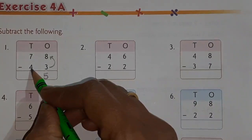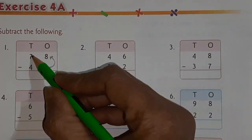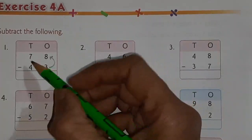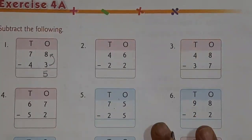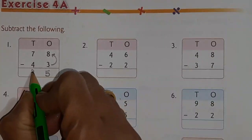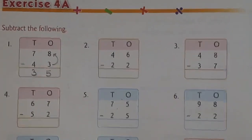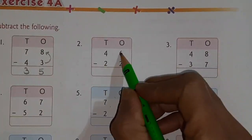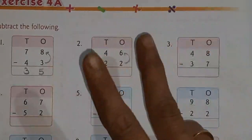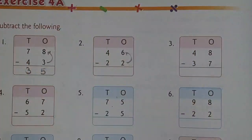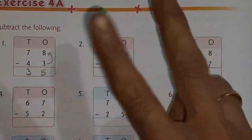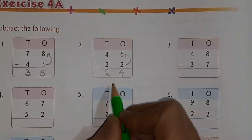Here also we do the same. After 4, count till 7: 5, 6, and 7 — so 3 fingers — so we are writing 3 here. Next one: 46 minus 22. 6 is the bigger number, so after 2 count till 6 — 3, 4, 5, and 6 — 4 fingers, write 4 here. Same way: after 2 count 3, 4 — 2 fingers — answer is 2. Total answer: 24.